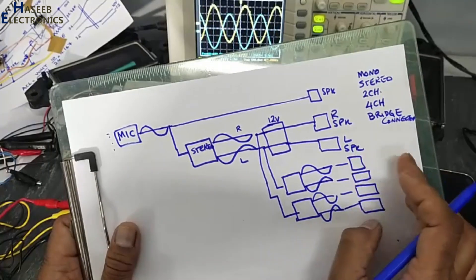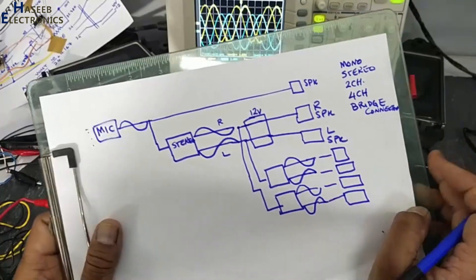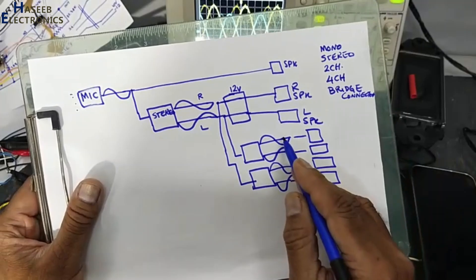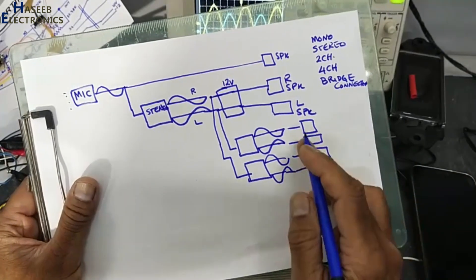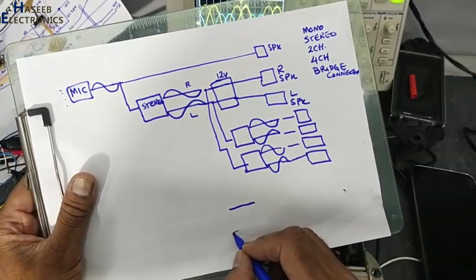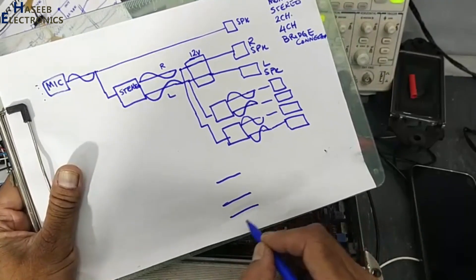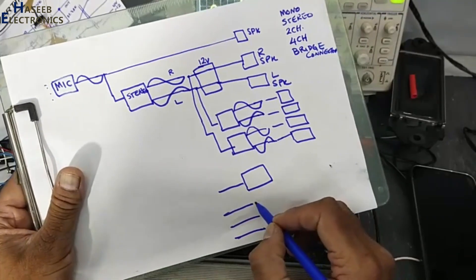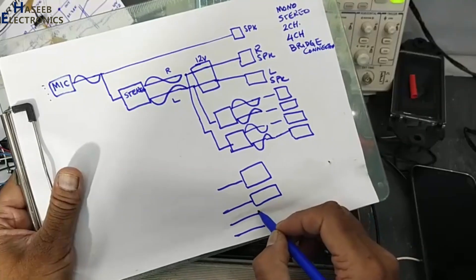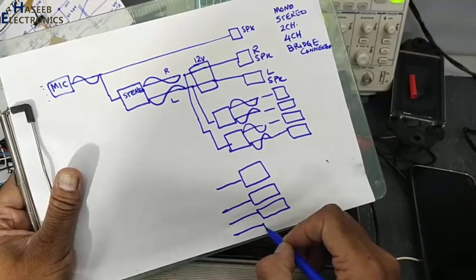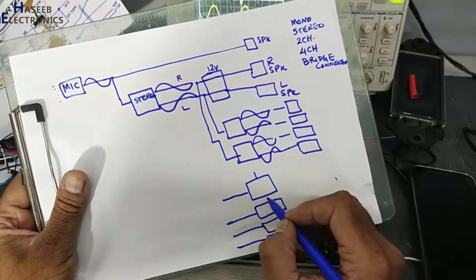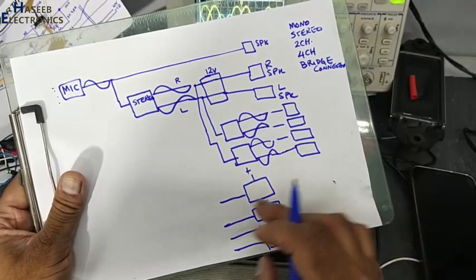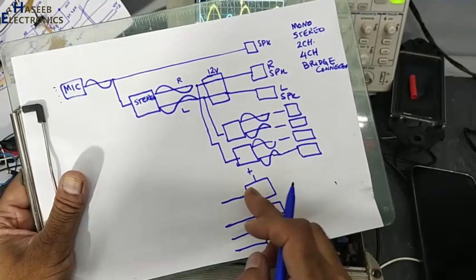Car cassette players, four channels, four speakers, two channels. But when we say some car subwoofer amplifier, that time these four channels similarly are injected into four channels. Each channel is supplied with dual power supply, plus minus. Same way this plus minus, this plus minus, this plus minus. Four channels, four different input signals, but dual power.